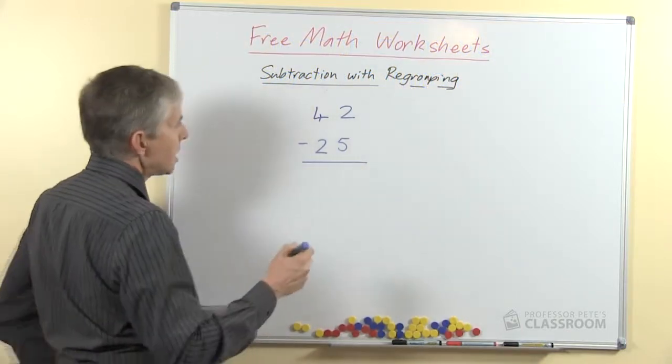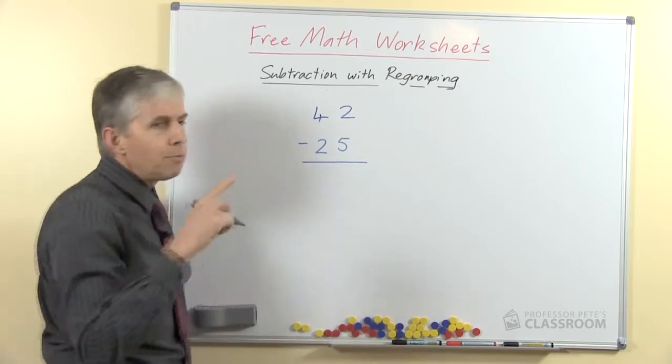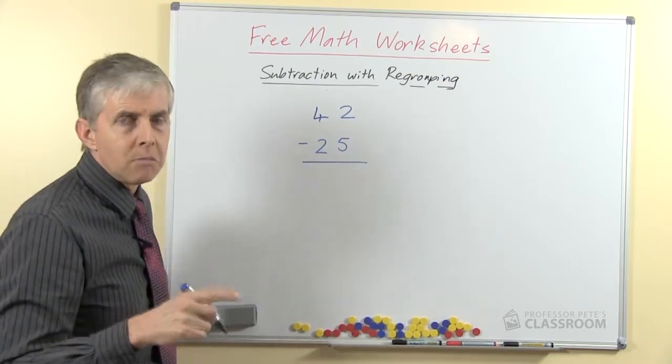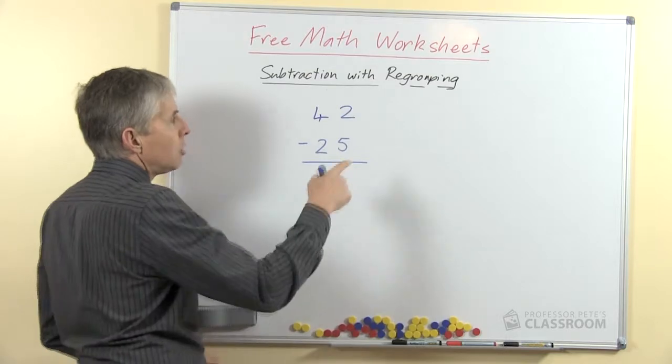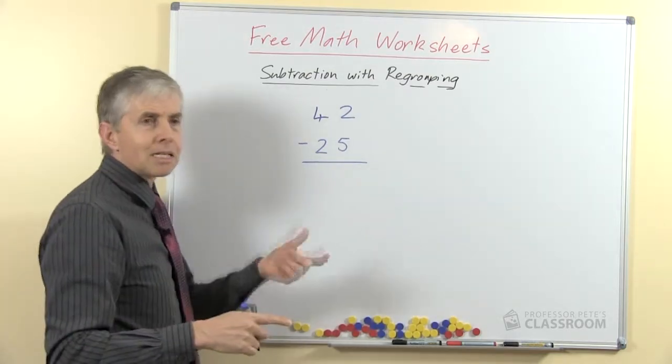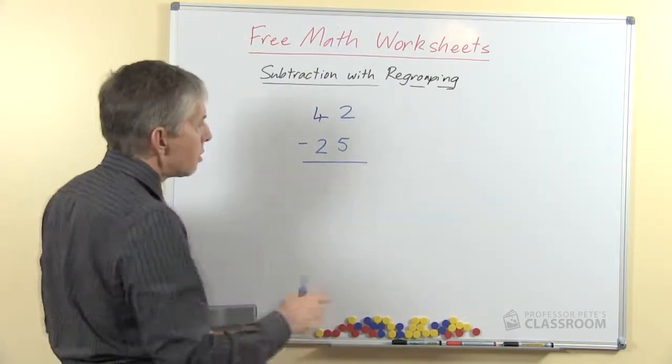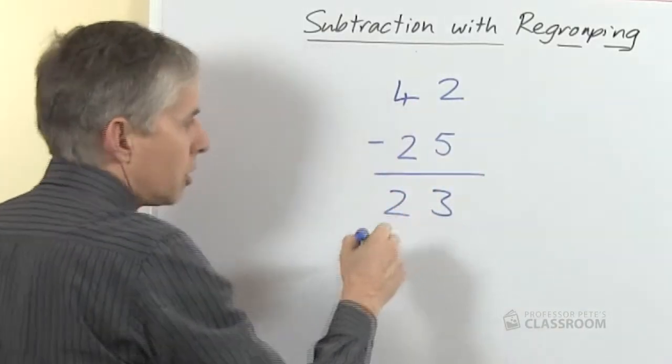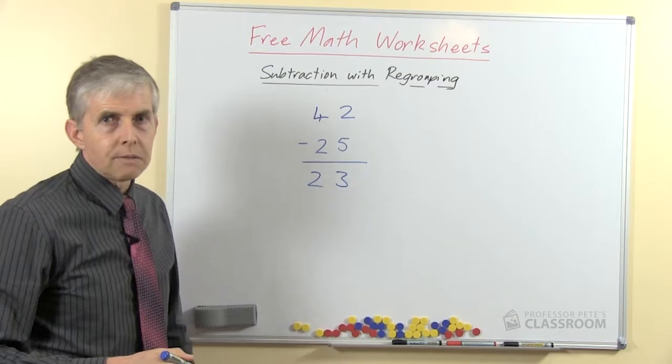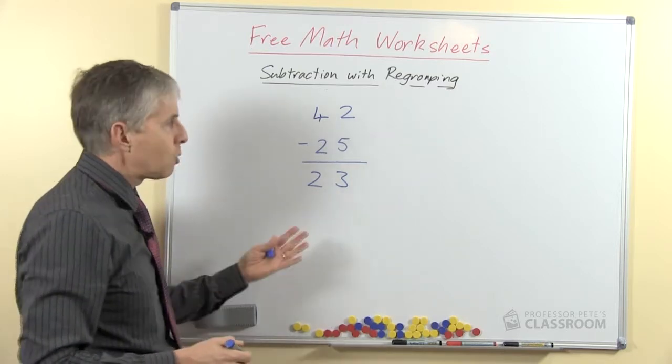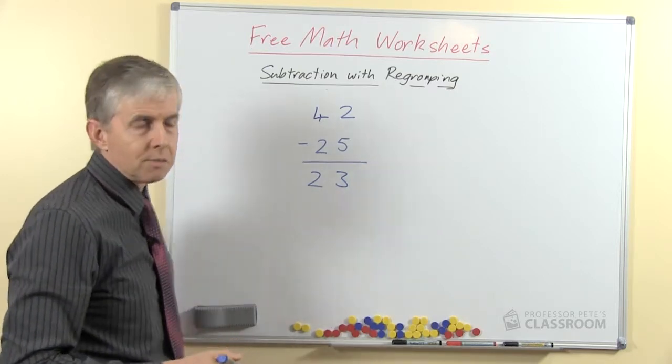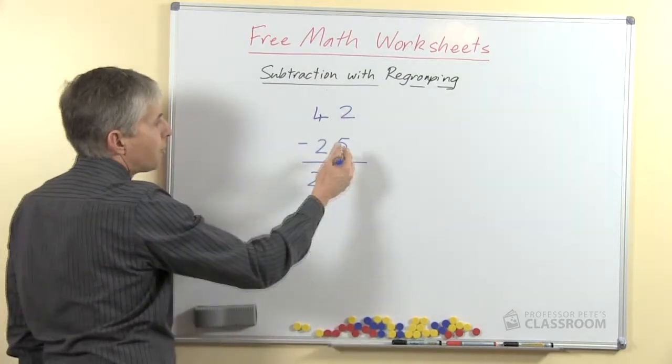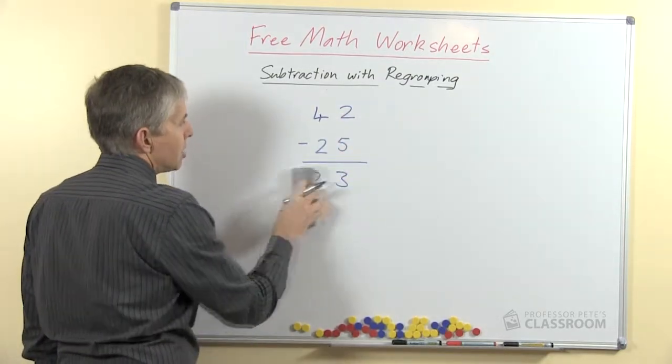So we have 42 take away 25. Now one of the biggest mistakes I've observed in my students is that they want to use the word from and then they get mixed up as to which way around it is. So if you do this quickly and say 2 from 4 is 2, get the answer. If you say it quickly enough you don't even notice that there's a mistake being made. 2 from 5 is 3 but that's not the right way to do the operation.